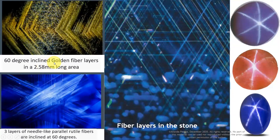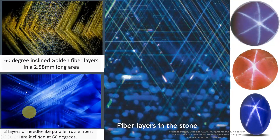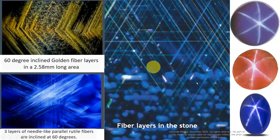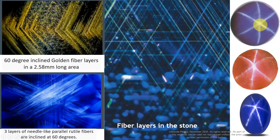Now look at this. Six-degree inclined golden fiber layers in the stone at 60 degrees. You can see here inside the stone, inside the sapphire, inside the corundum — there are three layers one over the other. You can understand here this is inside the stone. Three layers of needle-like parallel rutile fibers are inclined at 60 degrees. These are the cut and polished stones. This cut is called cabochon — a dome shape. We are polishing only the top side; the bottom side is natural, we don't polish or cut it.